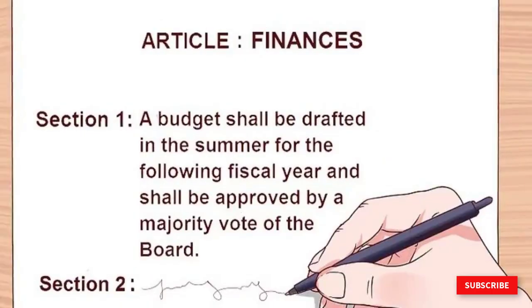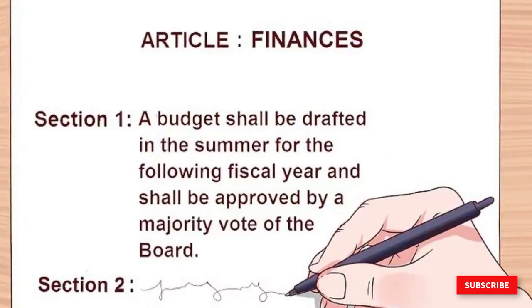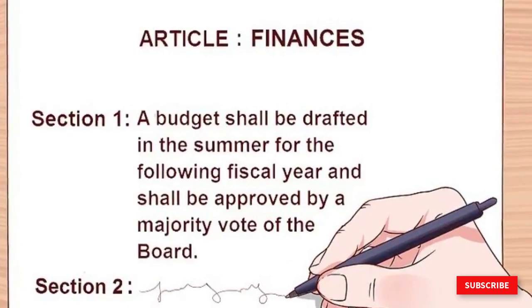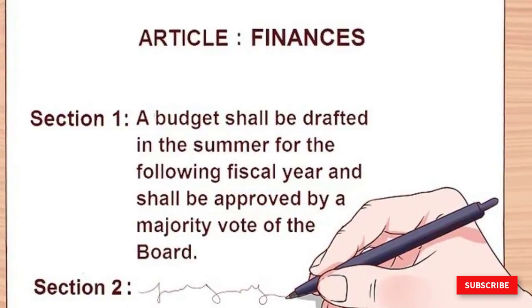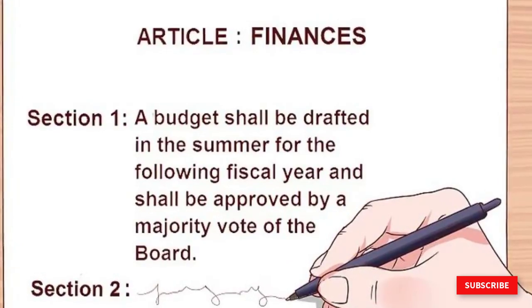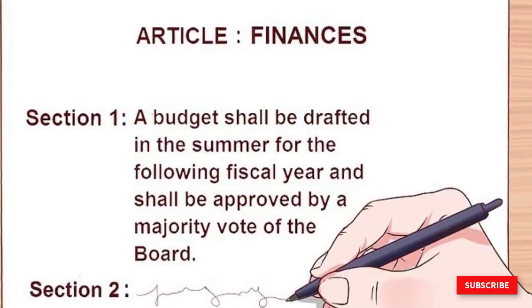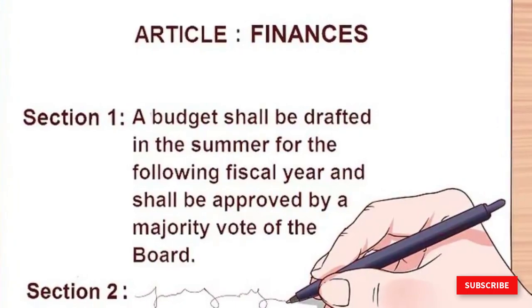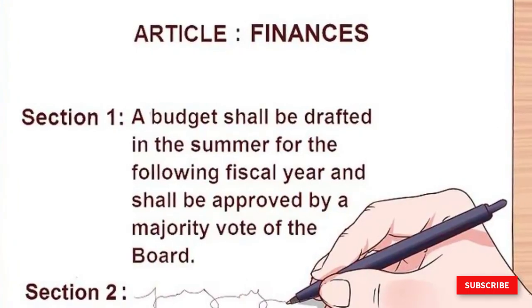The finances article should specify when a budget will be created, who will be responsible for keeping financial records — usually the treasurer — how expenses are approved, and what will happen to funds should the organization dissolve.